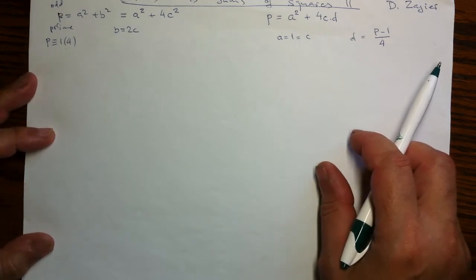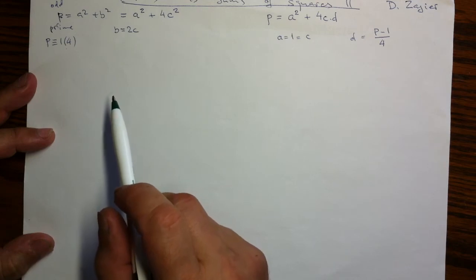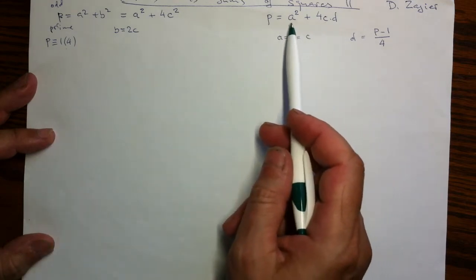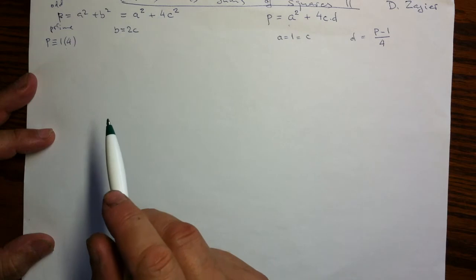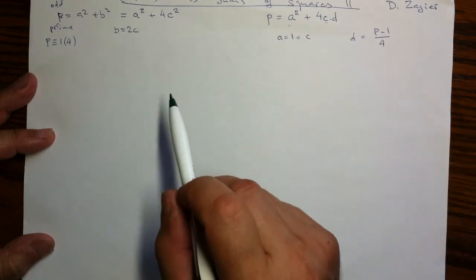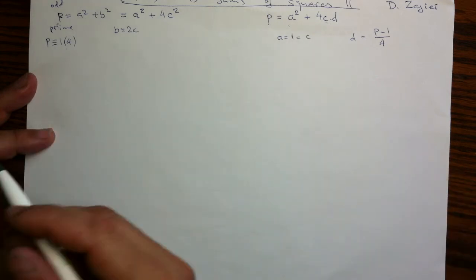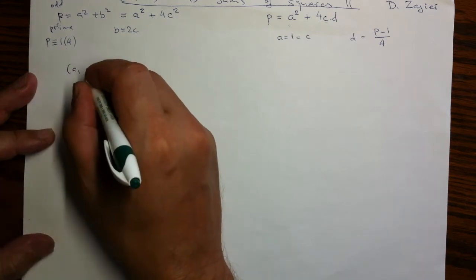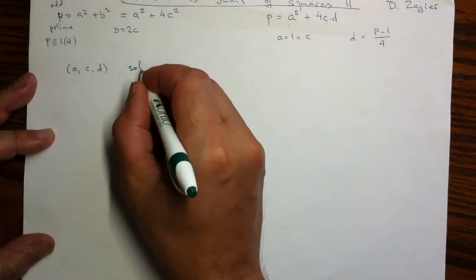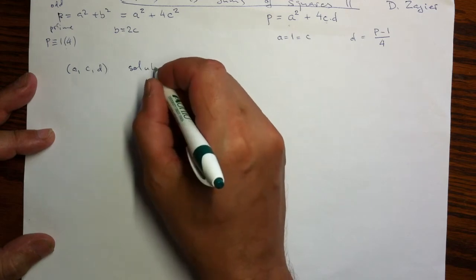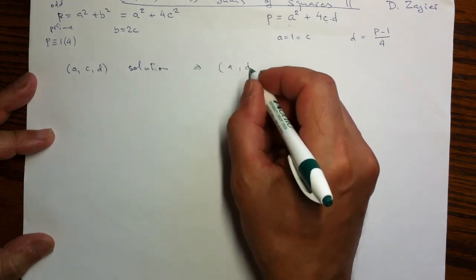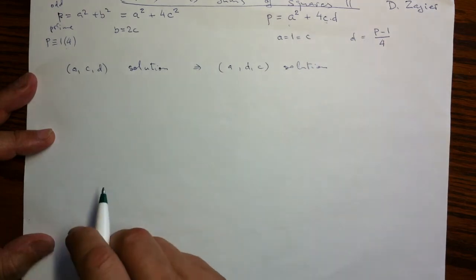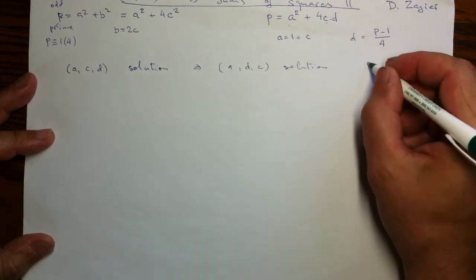The key idea of Zagier is to look at the set of these solutions, and the set of the original P equals A squared plus B squared is a part of this, and it is a part of those where C and D are equal. But in general, flipping C and D will give us another solution, so that is an operation on the set of solutions. If we have an A, C, D triple which is a solution of the second equation, we'll just call it a solution, then so is A, D, C. And this is an operation which undoes itself, so then twice it is like doing nothing. It is called an involution.